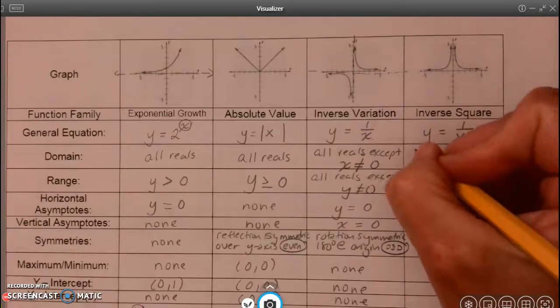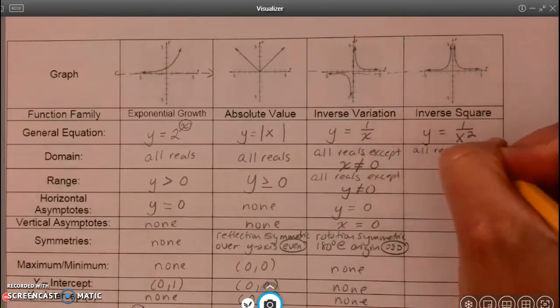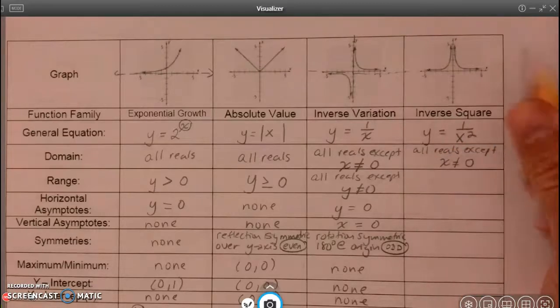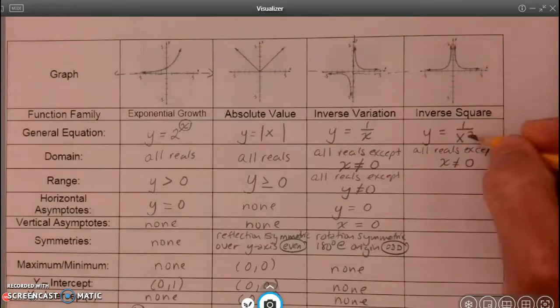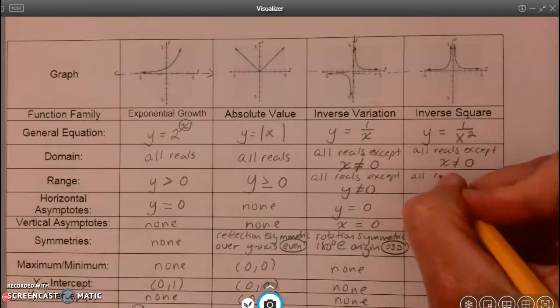So all reals, except x cannot equal zero. And because x can't equal zero, the value of this fraction is never going to be zero, so once again, y cannot be zero.